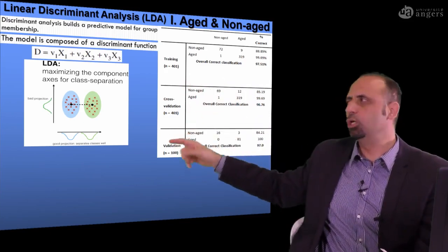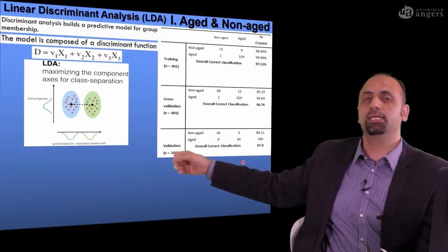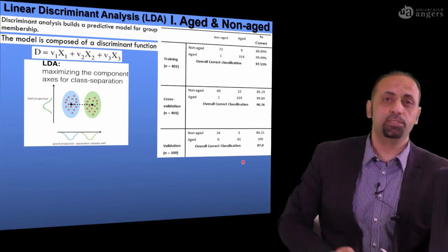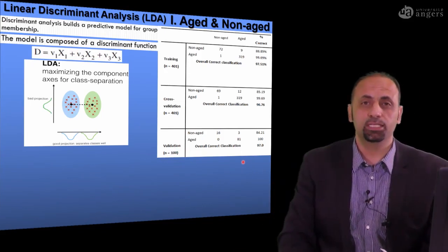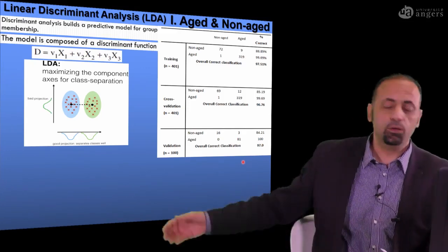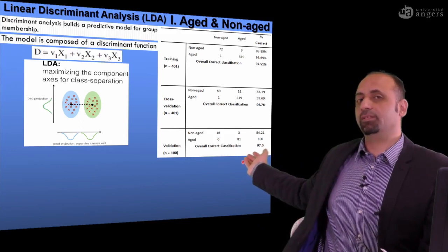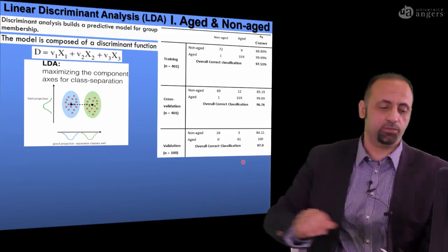But usually, I advise you to look all the time for validation set, because it's much better to avoid some problems during developing the model, like overfitting or underfitting. Also, if you look to the quality of the model, 97% correct for classification.